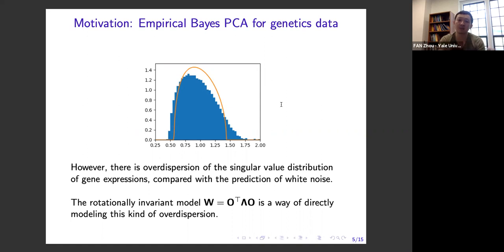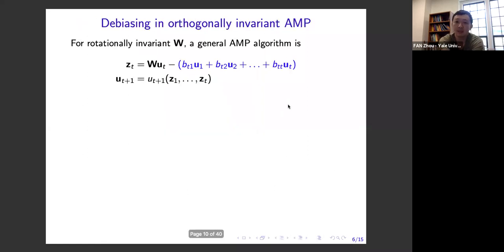This kind of rotationally invariant model is a way of directly modeling this over-dispersion, which I think is quite common in data. It directly describes the spectral distribution of your noise while still preserving the generic property of the eigenvectors.